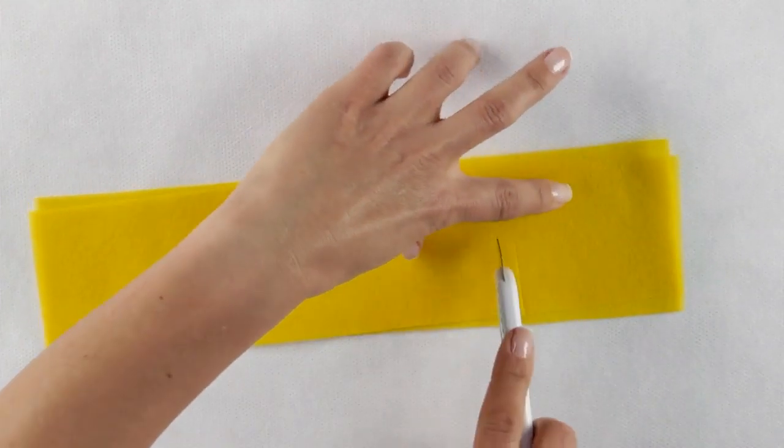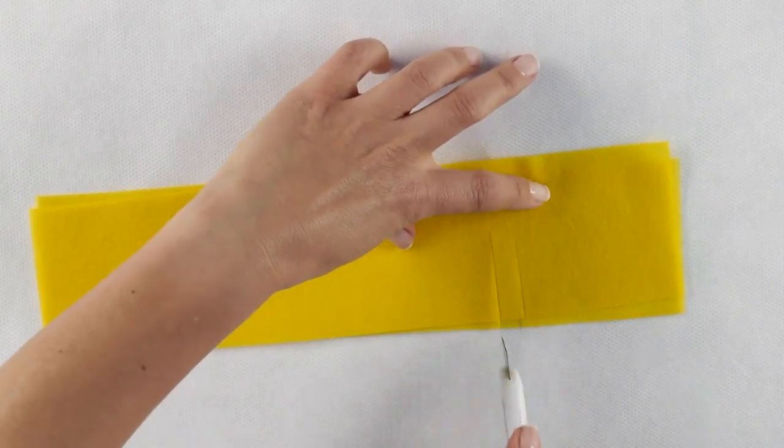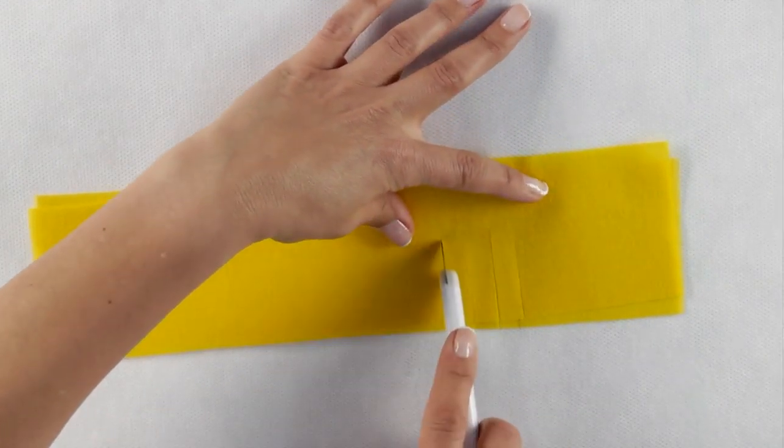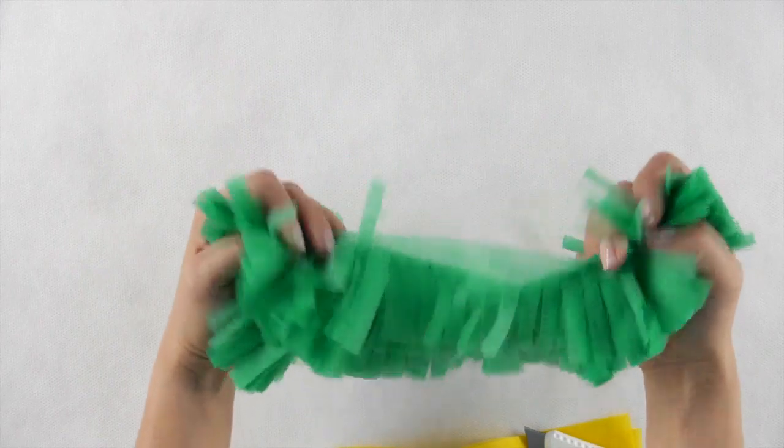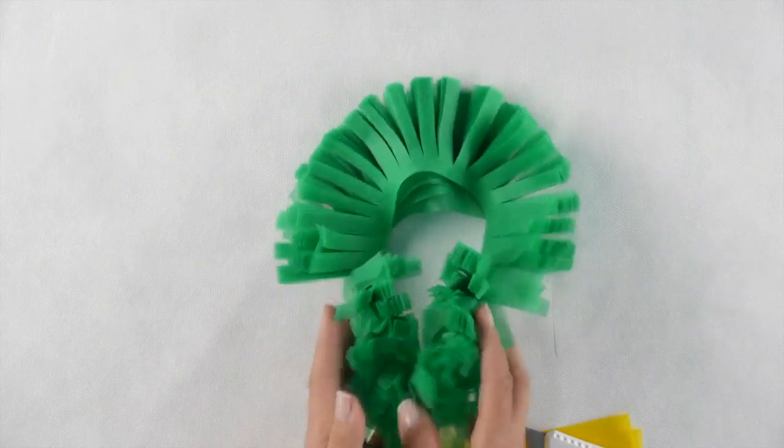Just place the SmartFab on the table, tense it slightly, and cut. By the way, you can cut 10 to 15 layers of SmartFab at the same time.